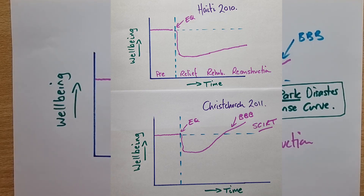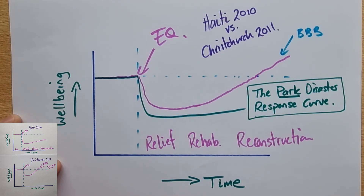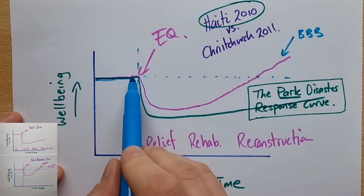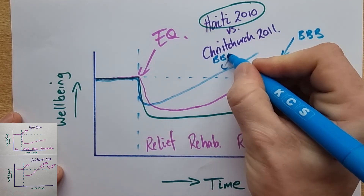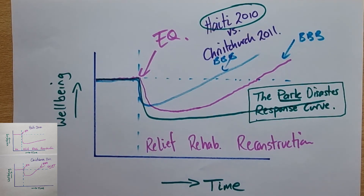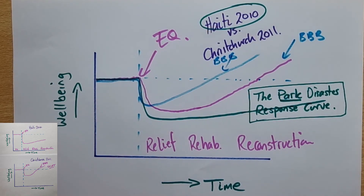We can then directly compare the two curves. Drawing Haiti's curve, we have normality along here, then a steep drop-off that goes off into the distance without recovering. Comparing that to Christchurch, we have the same normality line, then a shallower dip followed by a build-back-better recovery above the original baseline. So why are these lines so different? Why is Christchurch so much shallower, with a faster recovery? This essentially boils down to development.